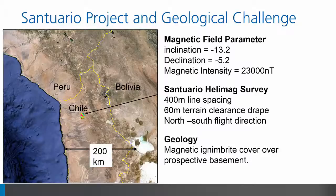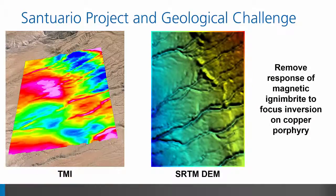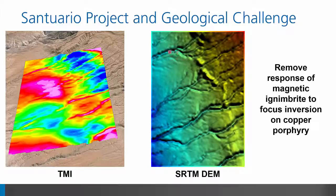Available data over the area included magnetic field observations from a HeleMag survey and estimates of cover rock thickness. The TMI response from the HeleMag survey is relatively flat, but is complicated by high-frequency signal from a weakly magnetic cover rock, which was dissected by topographic gullies. The inversion is therefore challenged to focus its efforts on resolving the copper porphyry targets.